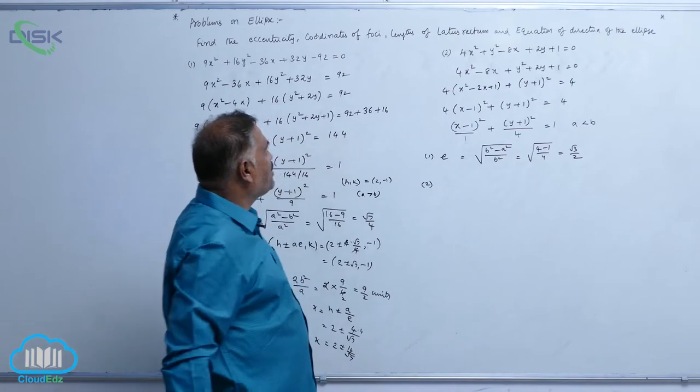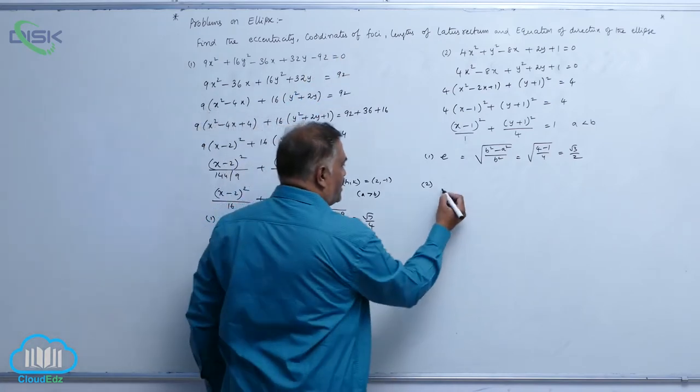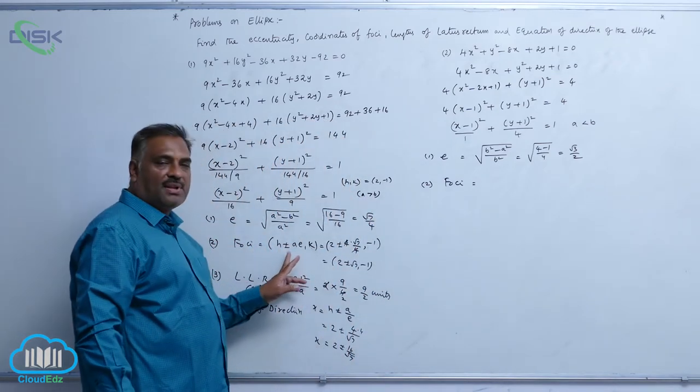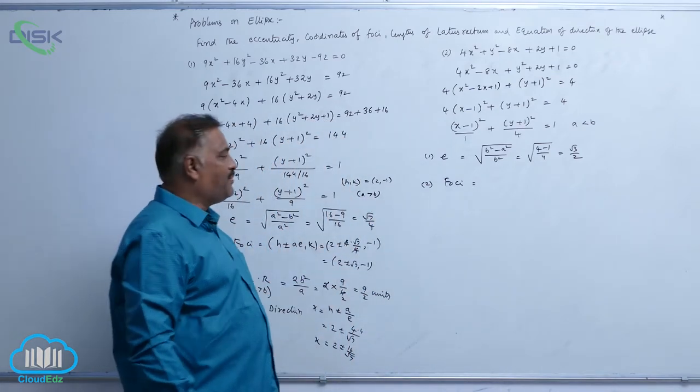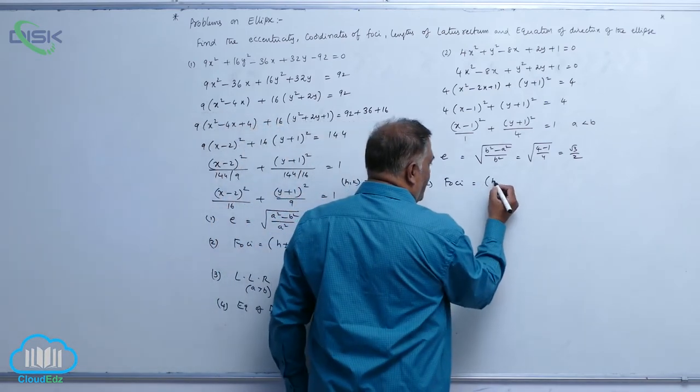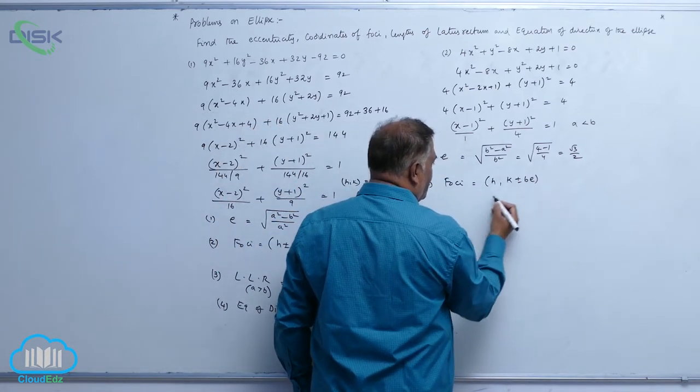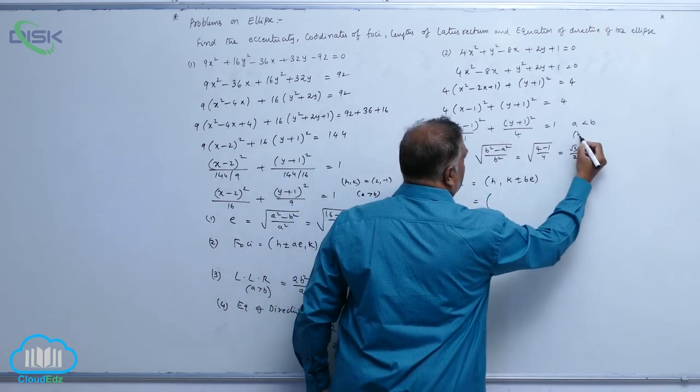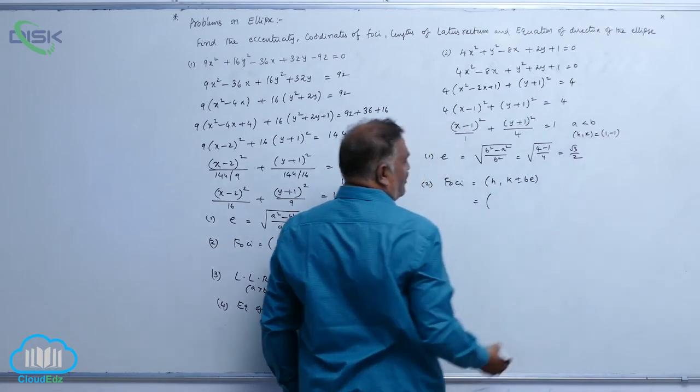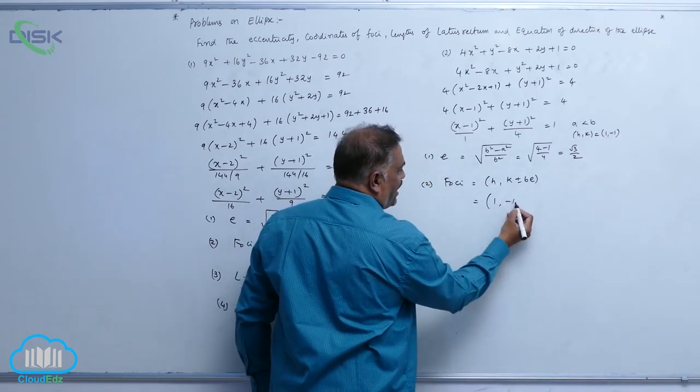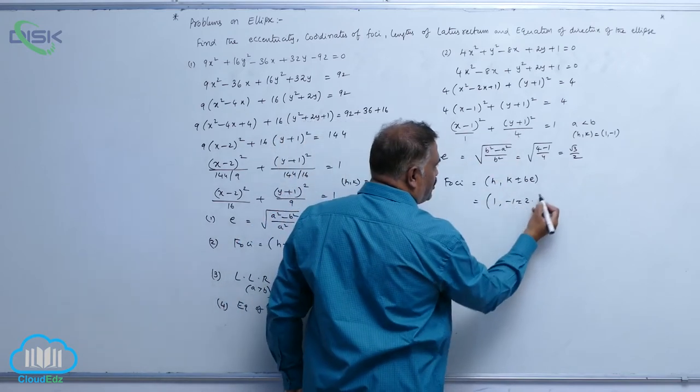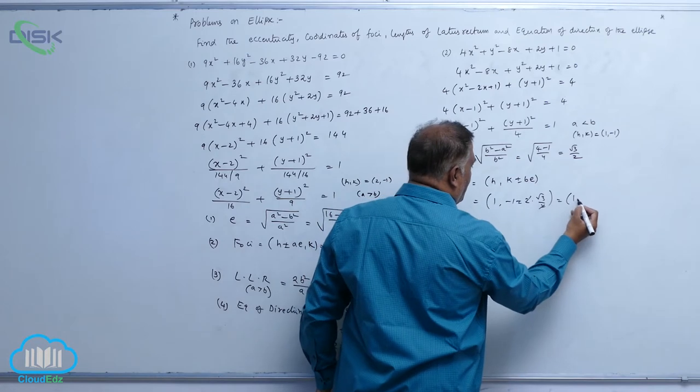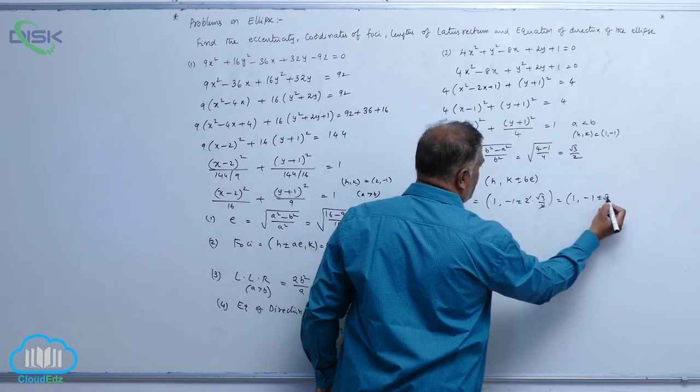Now, second part of the question, coordinates of foci. So foci is equal to, in our previous case, we got h plus minus a e comma k. In this case, it will be h comma k plus minus b e. That is, what is h comma k value here now? That is equal to 1 comma minus 1. So, 1 comma minus 1 plus minus, b value is 2, e is root 3 by 2. 2 gets cancel, 1 comma minus 1 plus minus root 3.